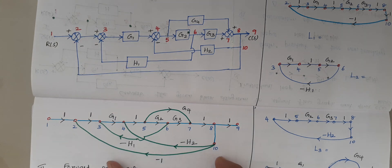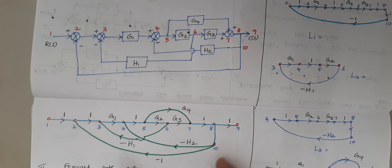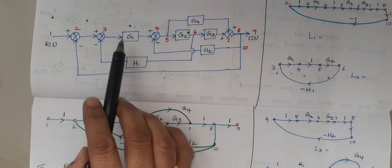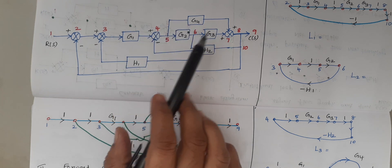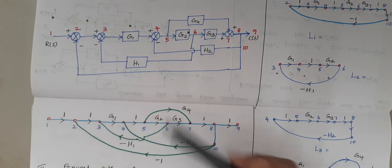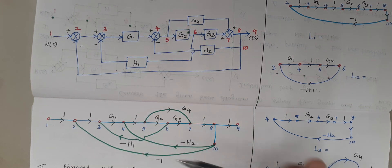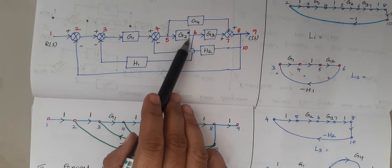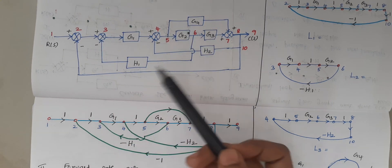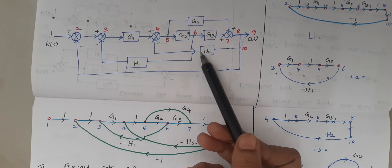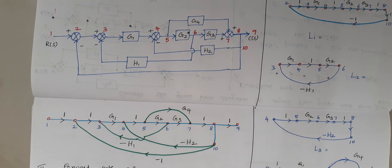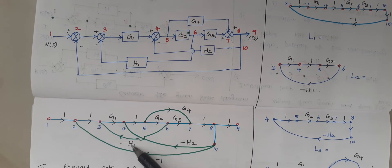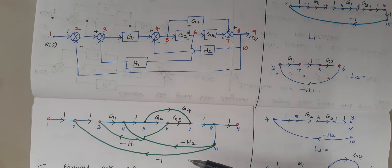After drawing the signal flow graph, you have to check whether all the elements in the blocks have appeared. We can verify G1, G2, G3, G4, then H1, H2, and the unity feedback — all are present in the signal flow graph as well.